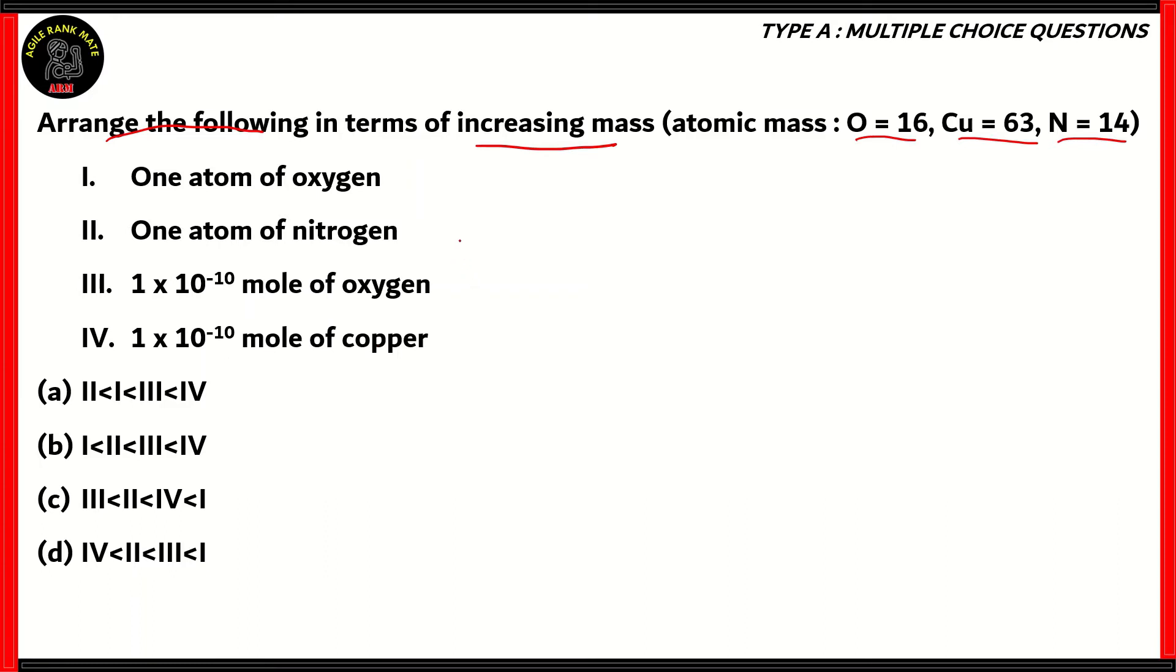How do we solve this question? We have to use the Avogadro's number again, which is 6.023 into 10 raised to 23 of something. In order to find out 1 atom of oxygen, we take its gramatomic mass, which is 16, and divide it by the Avogadro's number, 6.023 into 10 raised to 23. If you do 16 over 6, you'll get an approximate value of 2.66 into 10 raised to minus 23 grams. That's the mass of 1 atom of oxygen.